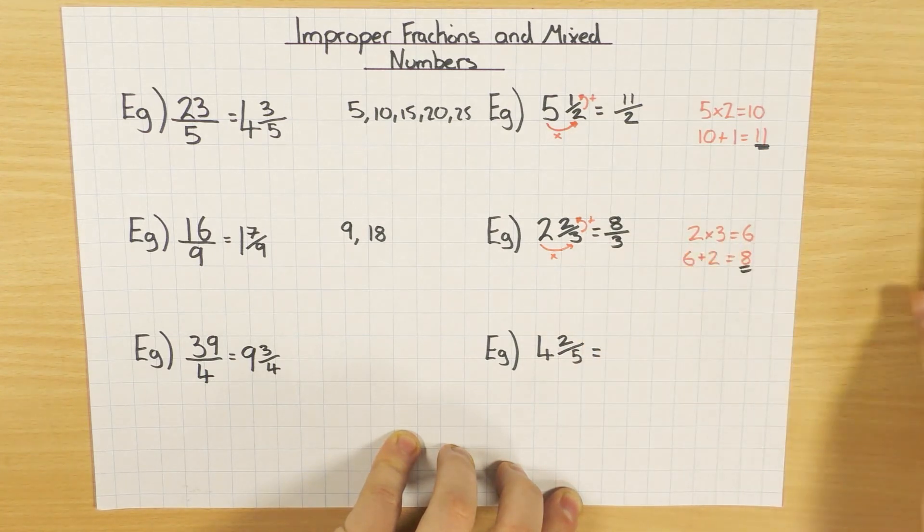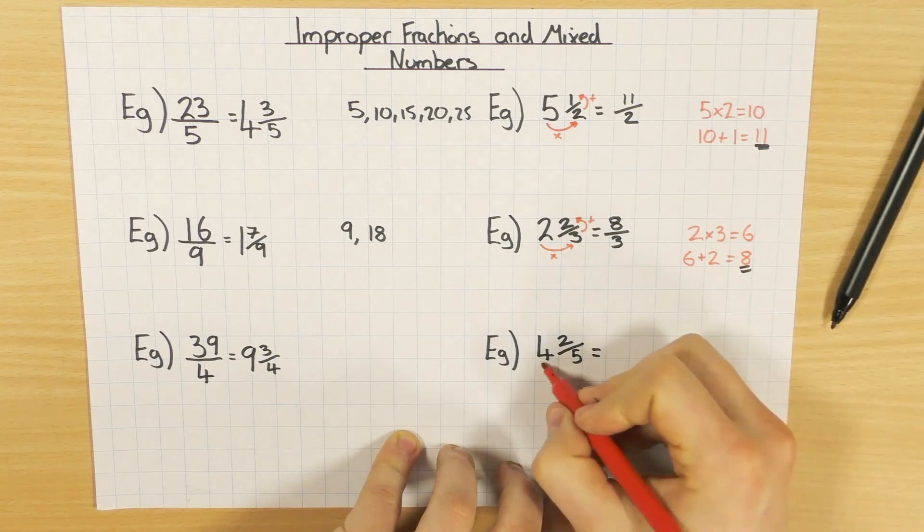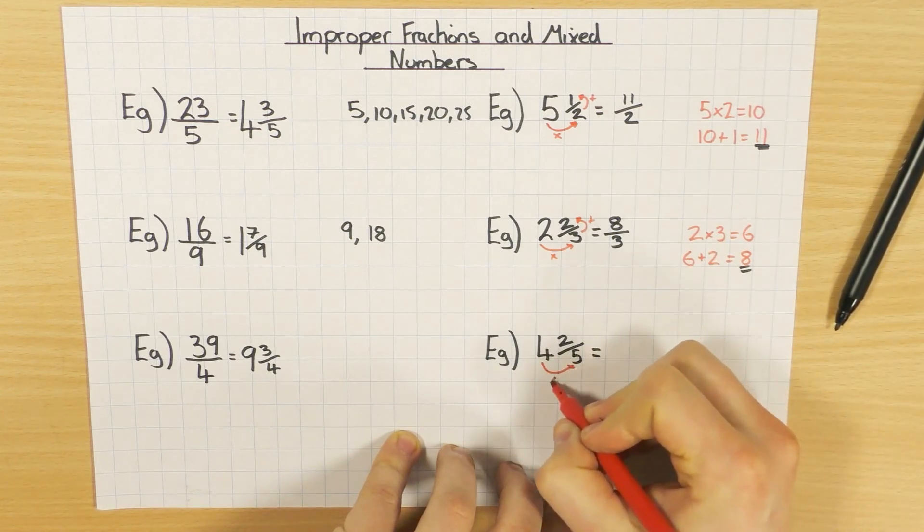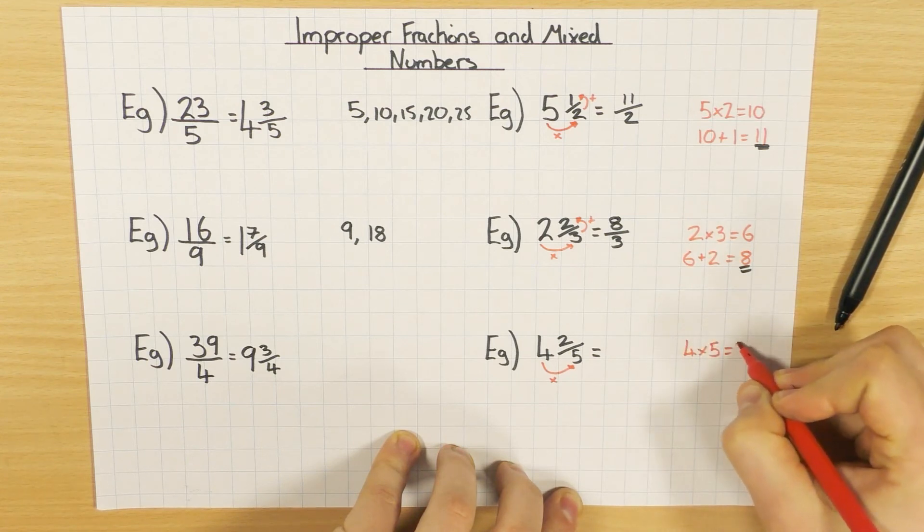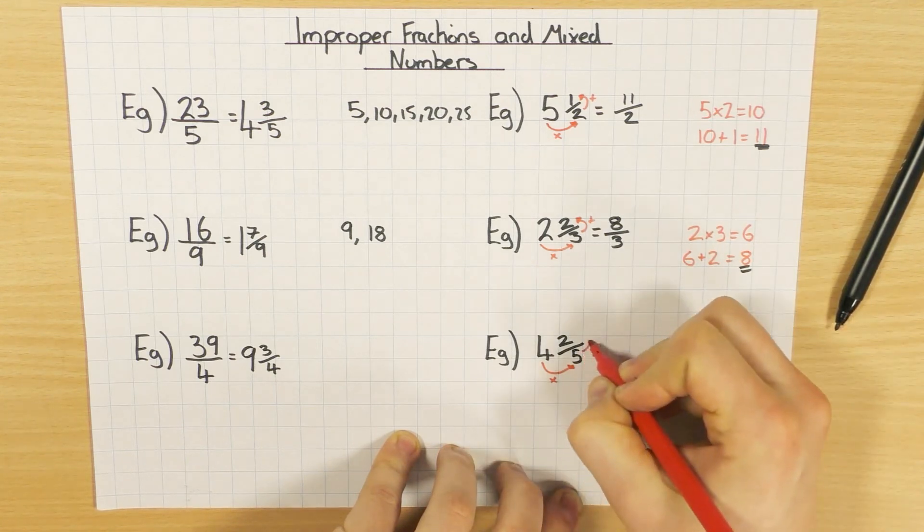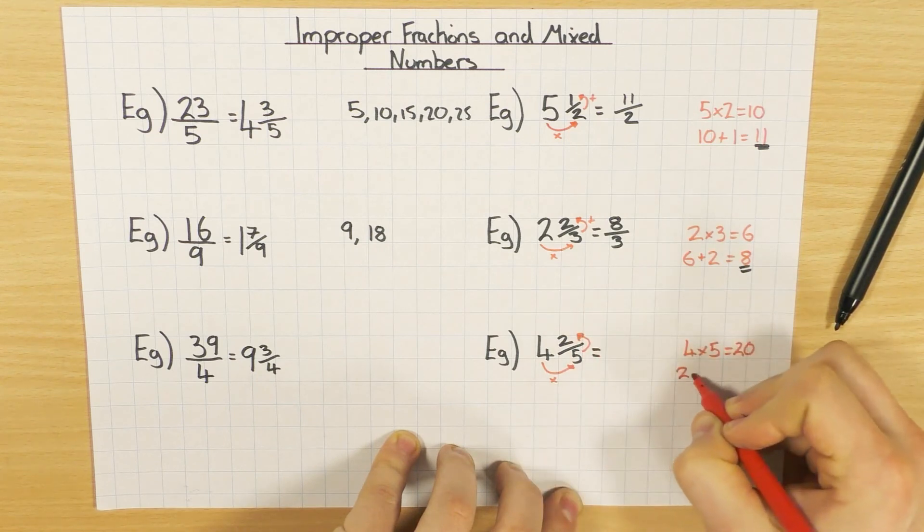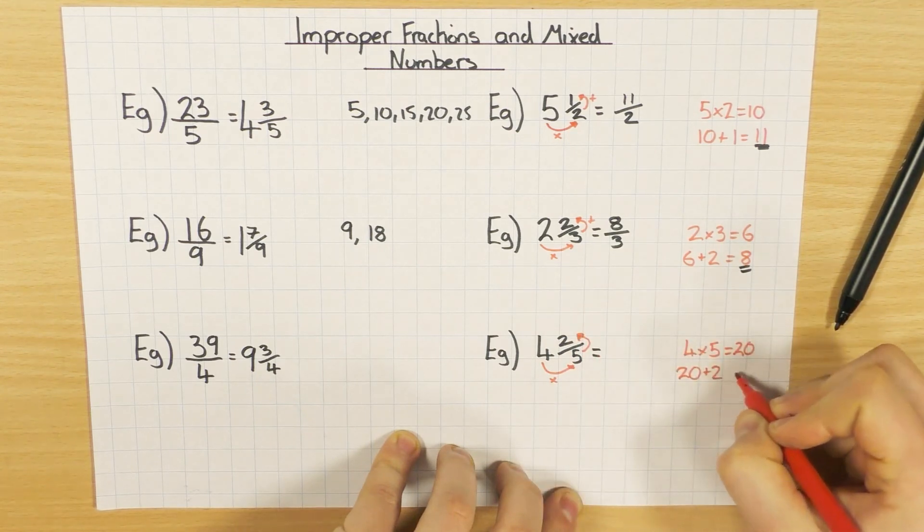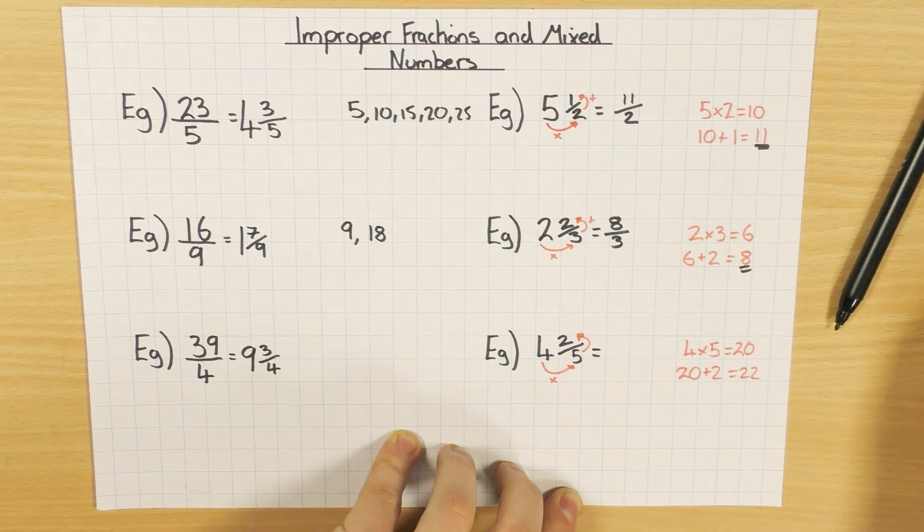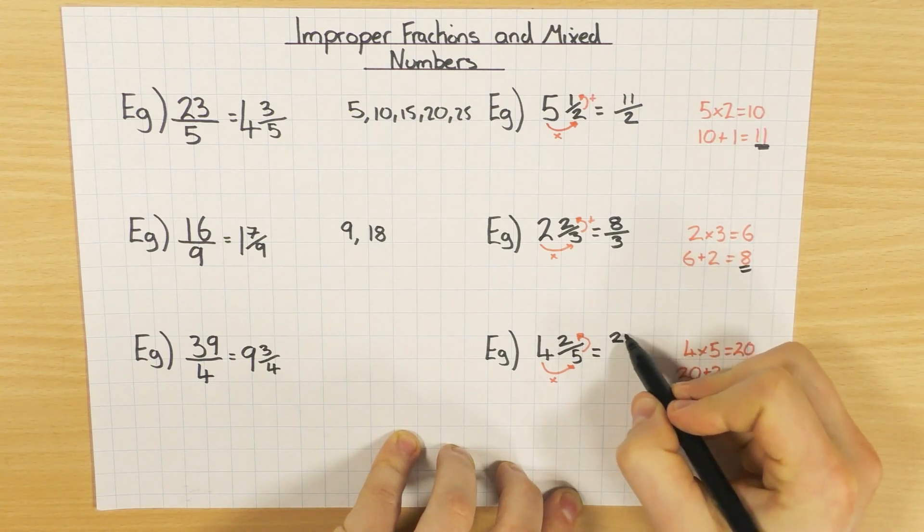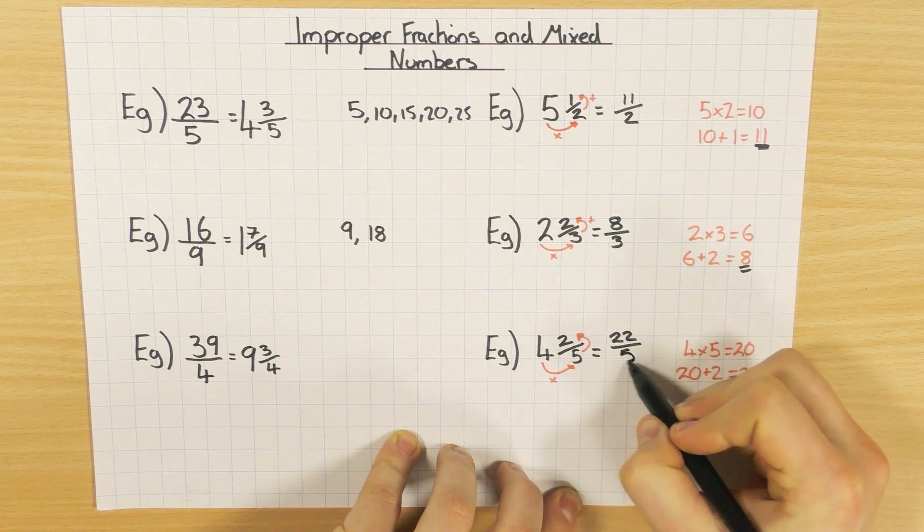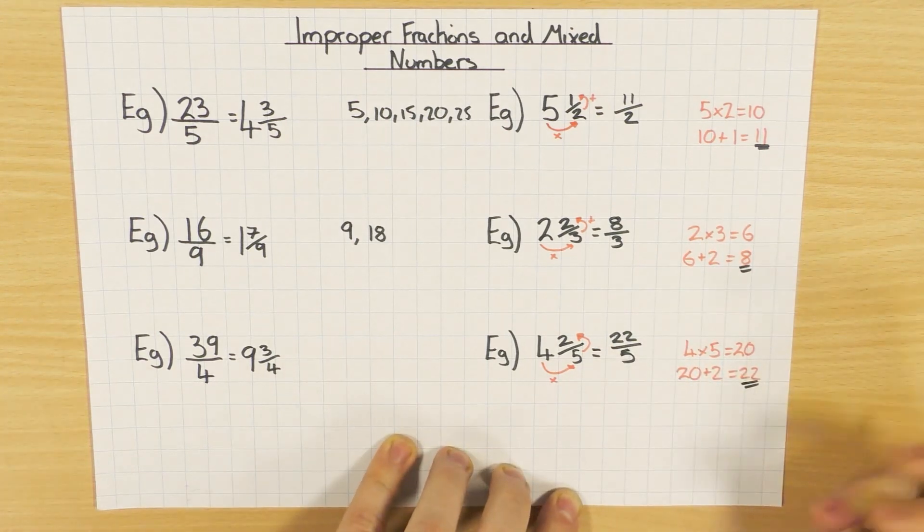So last one, 4 times 5, so 4 times 5 is 20. Then add the top number, so 20 plus 2 is 22. And again, that's your numerator, your top number. And your denominator there is 5, so it stays the same at 5.